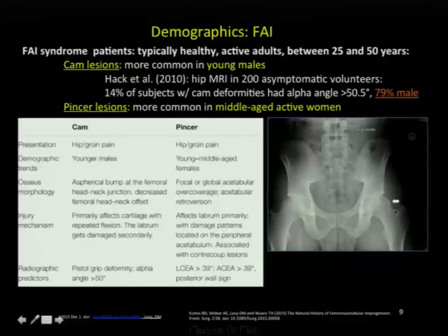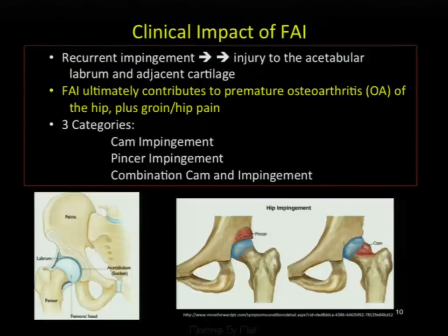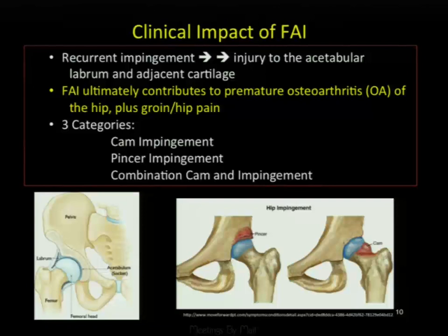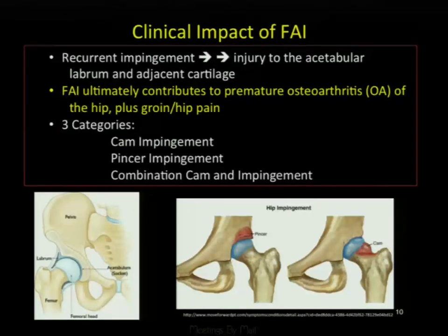This is an example of a CAM deformity. Recurrent impingement leads to injury to the acetabular labrum and adjacent cartilage. FAI ultimately contributes to premature osteoarthritis, plus groin and hip pain.